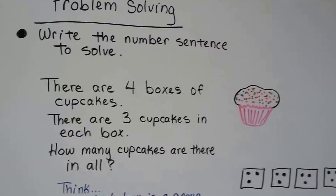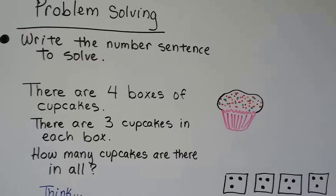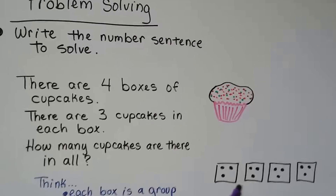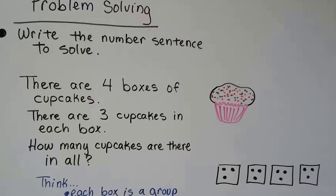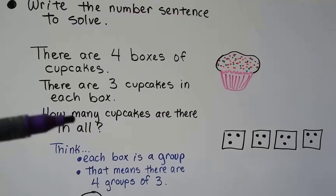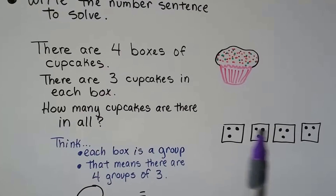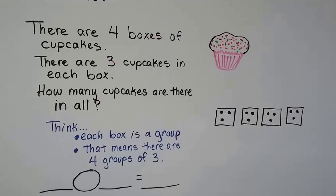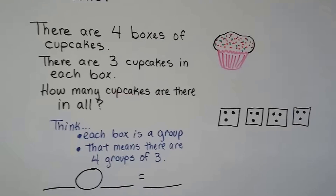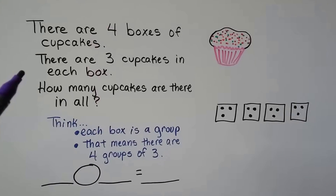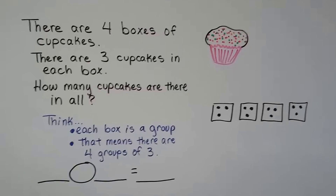Let's try some problem solving. Write the number sentence to solve. There are four boxes of cupcakes and there are three cupcakes in each box. How many cupcakes are there in all? I drew squares for the four boxes and put dots to represent the cupcakes, because drawing a picture can help you solve a word problem. Each box is a group, so there are four groups of three. Would we add, subtract, or multiply? It says 'in all,' so it's not subtraction. We have equal groups, so this would be multiplication.